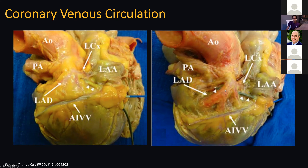You can actually safely ablate this LV summit VT in the vicinity of that communicating branch. This shows the anatomic correlate — the catheter in the great cardiac vein running into the communicating branch. The AIV goes down this way. The LV summit is right here, under this coronary circulation. There may be fat pad on top and underneath the LAD, but that doesn't mean you can get away without doing a coronary angiogram. You're still obligated to do that.